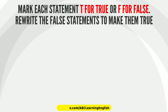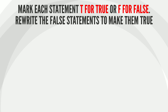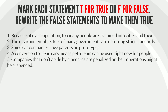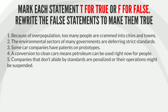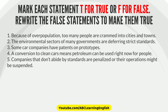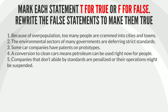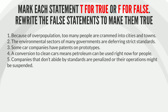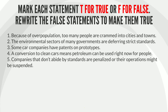Bonus: Mark each statement T for true or F for false. Rewrite the false statements to make them true. 1. Because of overpopulation, too many people are crammed into cities and towns. 2. The environmental sectors of many governments are deferring strict standards. 3. Some car companies have patents on prototypes. 4. A conversion to clean cars means petroleum can be used right now for people. 5. Companies that don't abide by standards are penalized or their operations might be suspended.